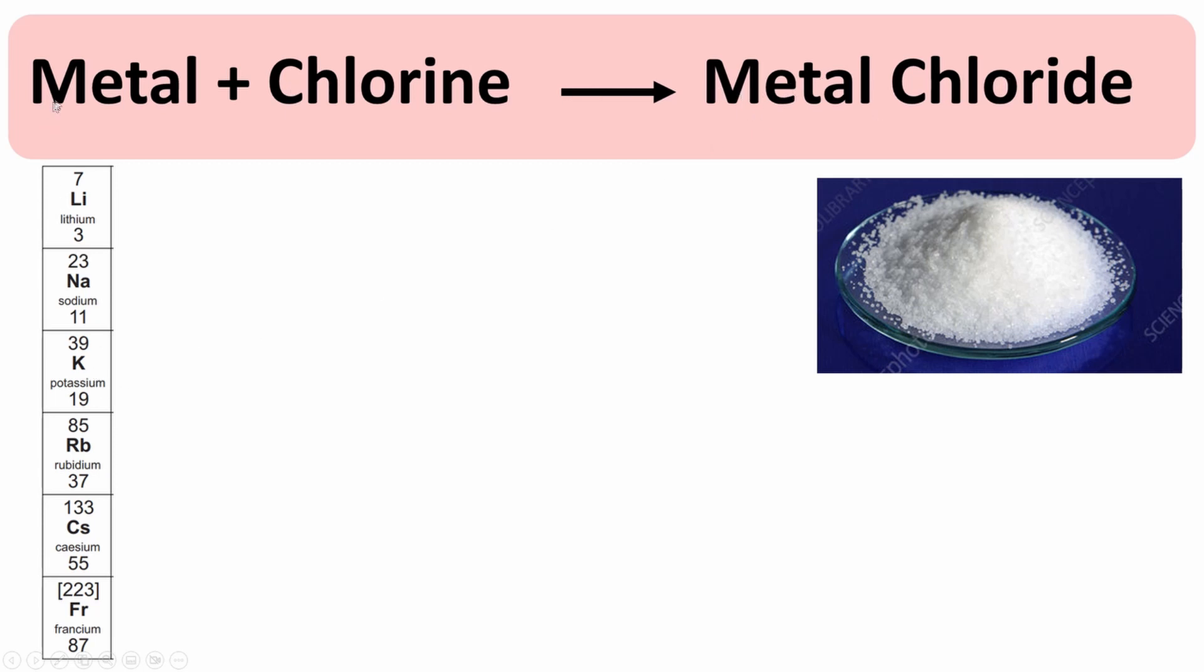If it was potassium, it would be potassium plus chlorine react to form potassium chloride, and so on. But they all form a chloride salt, and they all look like a white crystalline solid at room temperature.